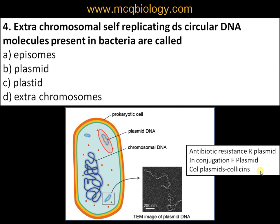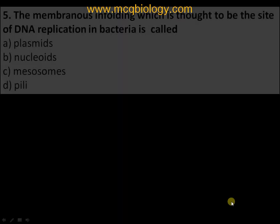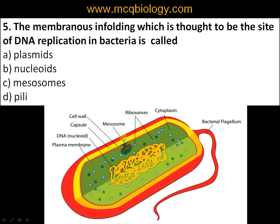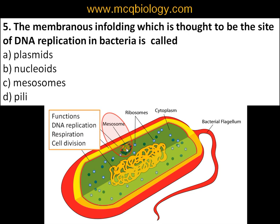Question number five: the membranous infoldings thought to be the site of DNA replication in bacteria are called: A) plasmids, B) nucleoids, C) mesosomes, D) pili. This is the plasma membrane, and these membranous infoldings are called mesosomes. Mesosomes are thought to have many prominent functions including DNA replication, respiration, cell division, and serving as the site of many enzymatic reactions. Therefore, the answer is C) mesosomes.